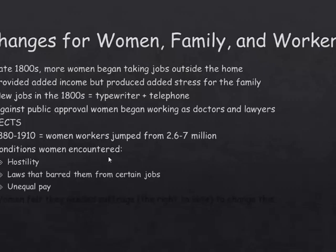The conditions women encountered were not so good. There was hostility because society said women were supposed to stay in the home. There were laws barring them from gaining certain jobs in the late 1800s and early 1900s, and some of that didn't change until the 1960s and 70s. If a woman was doing the same job as a man, she got less pay — sometimes up to 50% less. So factory owners hired a lot of women because they could pay them half the wages.